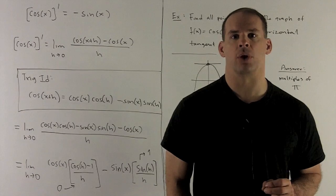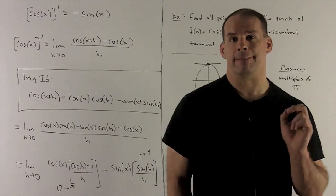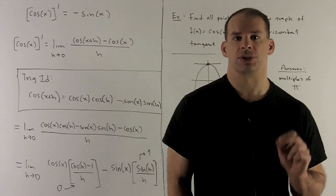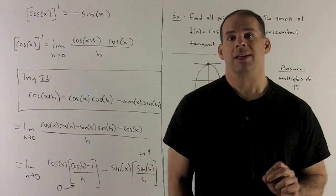Now let's take a look at the derivative of cosine of x. Its derivative is going to be minus sine of x. So how do we get that? Same idea.